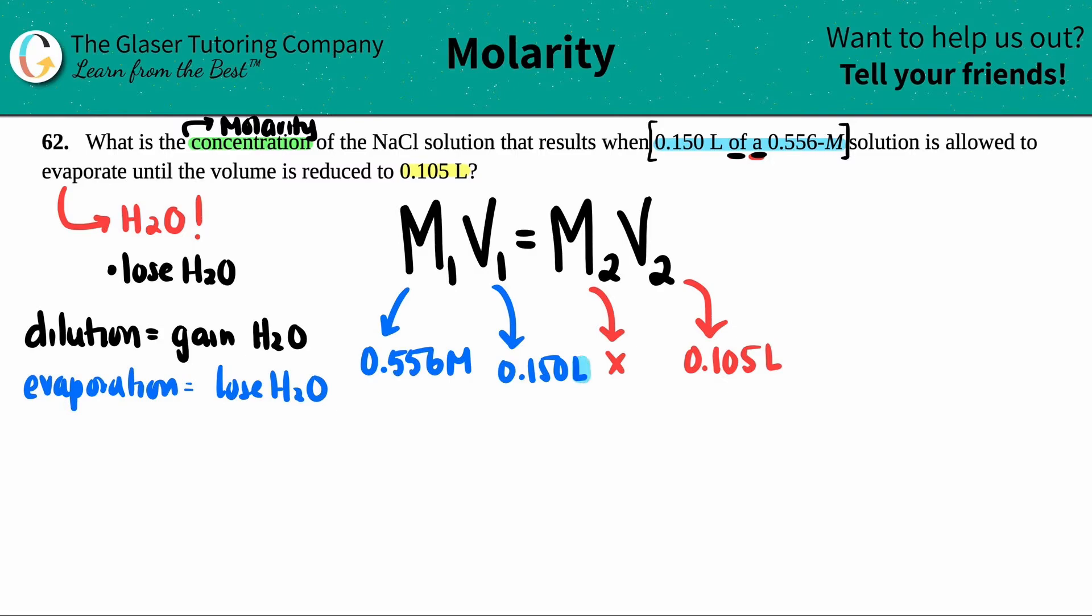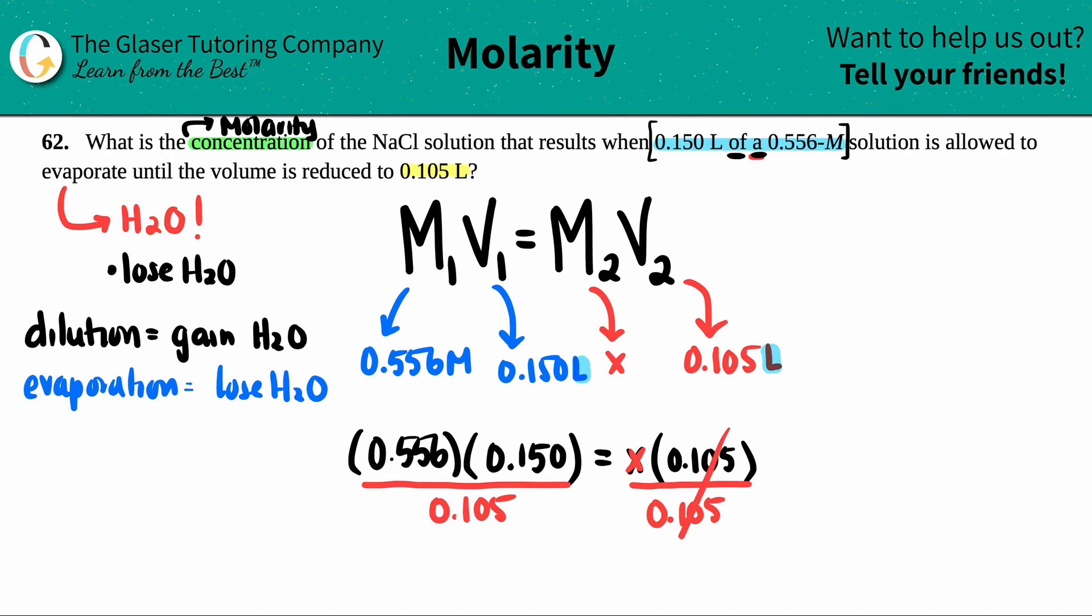We can proceed because the units for the volumes are the same, they're both liters. So let's just plug and play. We got 0.556 times 0.150 equals X times 0.105. I'm going to get rid of my units because I know what unit I'm going to have at the end. Solve for X, you want to divide by the 0.105. And then just plug and play. Let's see, 0.556 times 0.15 divided by 0.105. I have the lowest number of three sig figs, so my answer should have three sig figs. So 0.794.